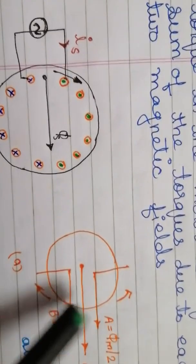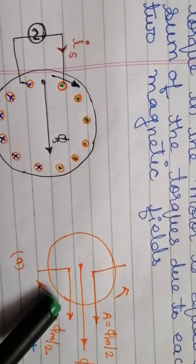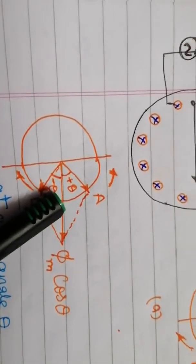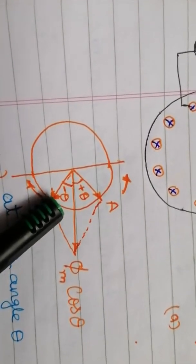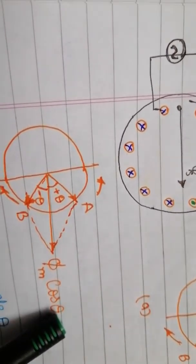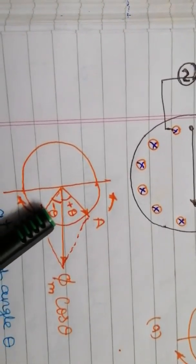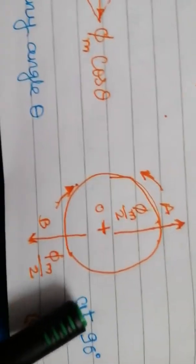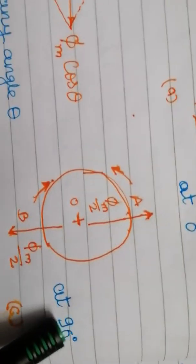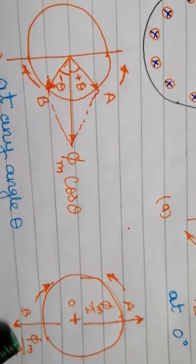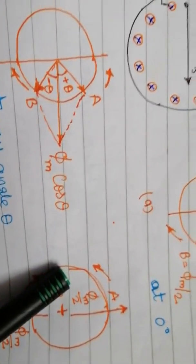After some time, when A and B have rotated through angles plus theta and minus theta respectively, at any angle theta the resultant flux is φm cos θ. After a quarter cycle of rotation, flux A and B are oppositely directed — at 90 degrees both fluxes are equal and oppositely directed, so the resultant flux is zero.